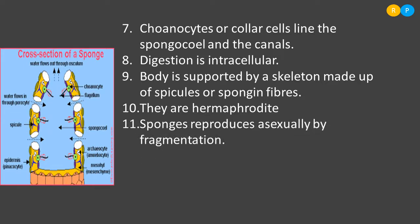Sponges reproduce asexually by fragmentation. Continuation of generations requires reproduction. In fragmentation, the parental animal divides into a number of pieces called fragments, and each fragment develops into a new sponge — no fragment goes to waste.